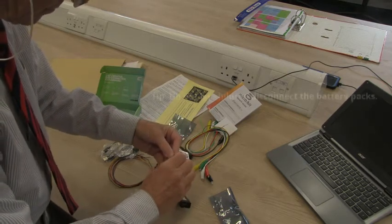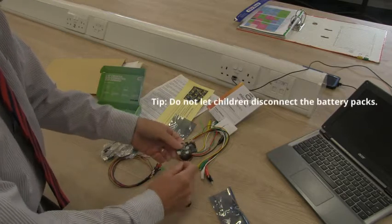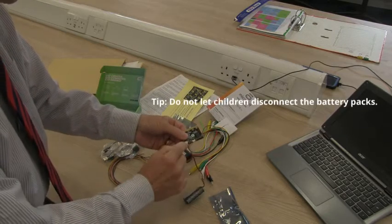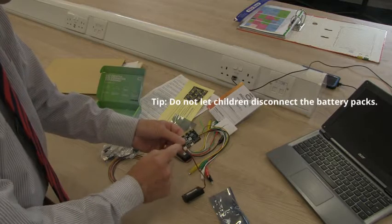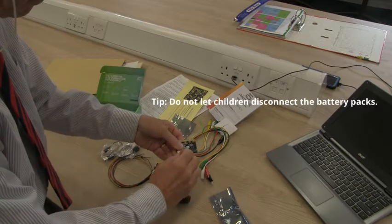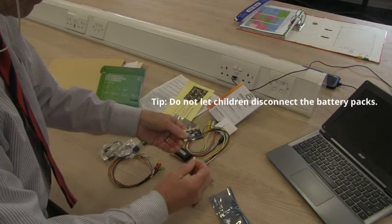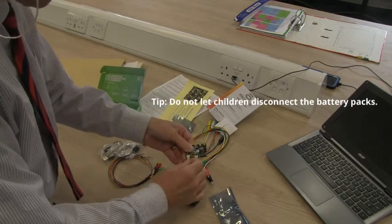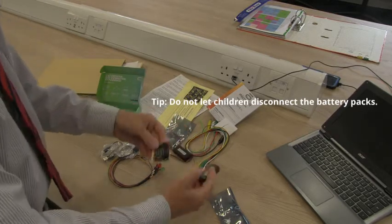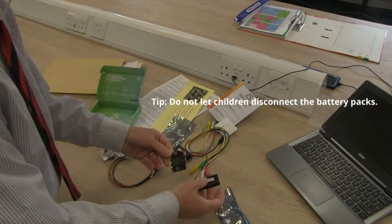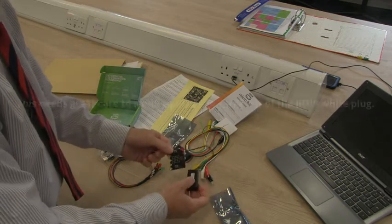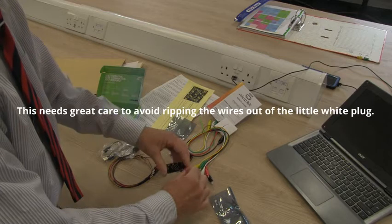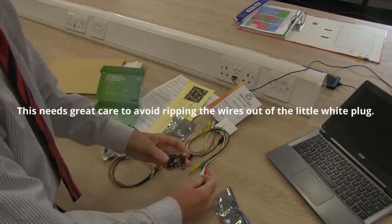But the big problem really comes when children disconnect it. They tend to pull on the wires. That pulls them out of the plug, leaves the plug in there. They actually have to be gripped by the plug and pulled out. What I tend to do is hand them out. If the children are going to need power, hand them out with the power supply connected, collect them in with the power supply connected, and then I make sure that they're removed properly.